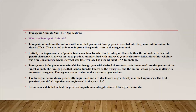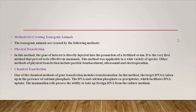Transgenesis is the phenomenon in which a foreign gene with a desired characteristic is introduced into the genome of the target animal. The foreign gene introduced is known as a transgene, and the organism being made is called a transgenic animal. These genes are passed on to successive generations, so transgenic animals are genetically engineered and also known as genetically modified organisms. The first genetically modified organism was engineered in 1980.